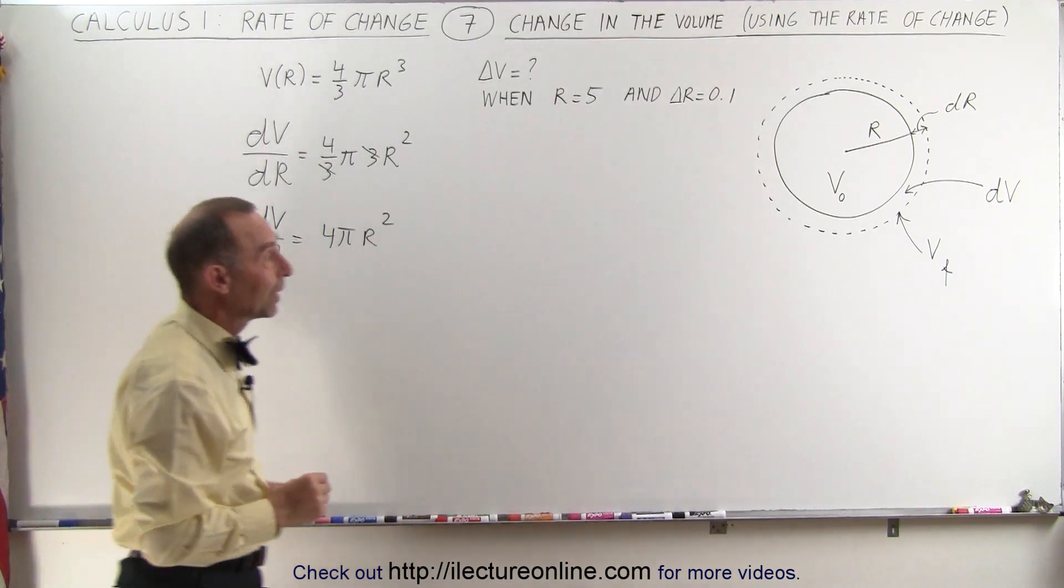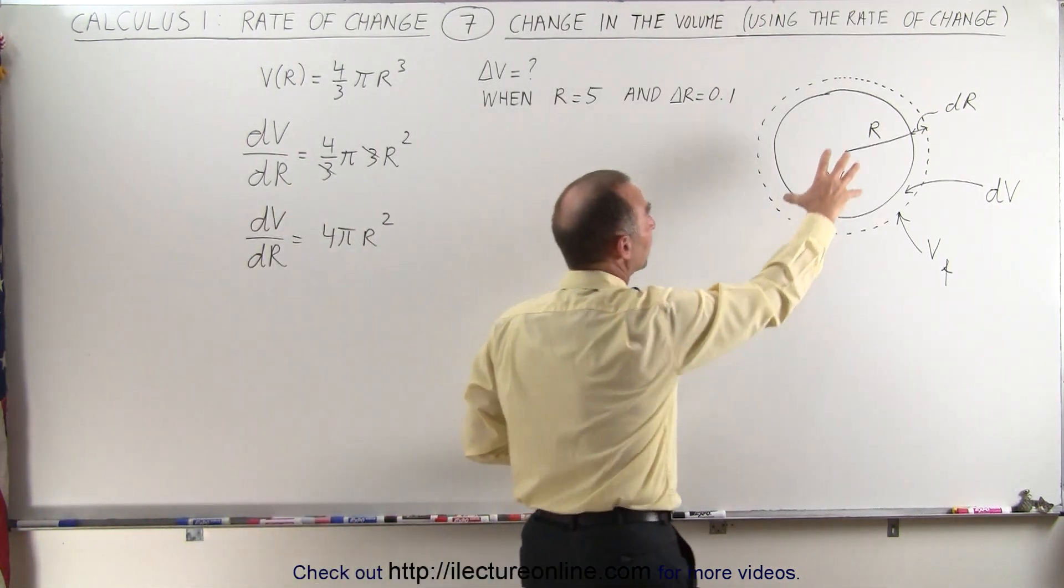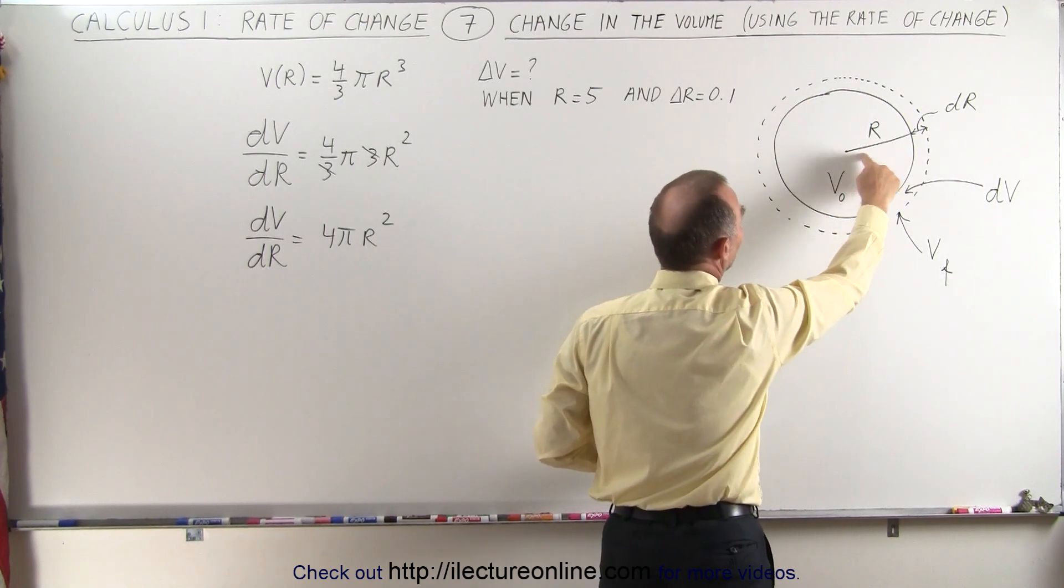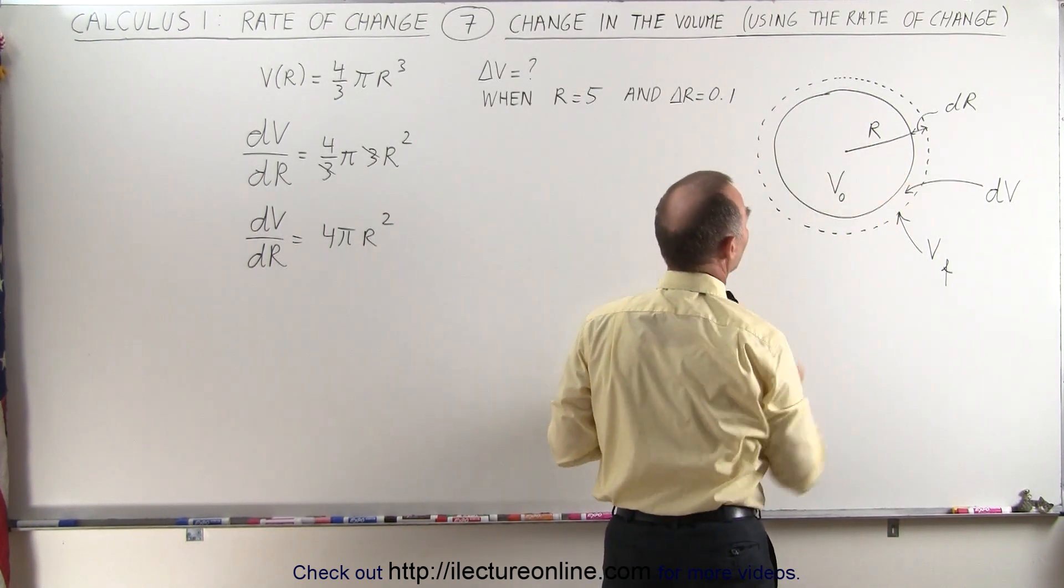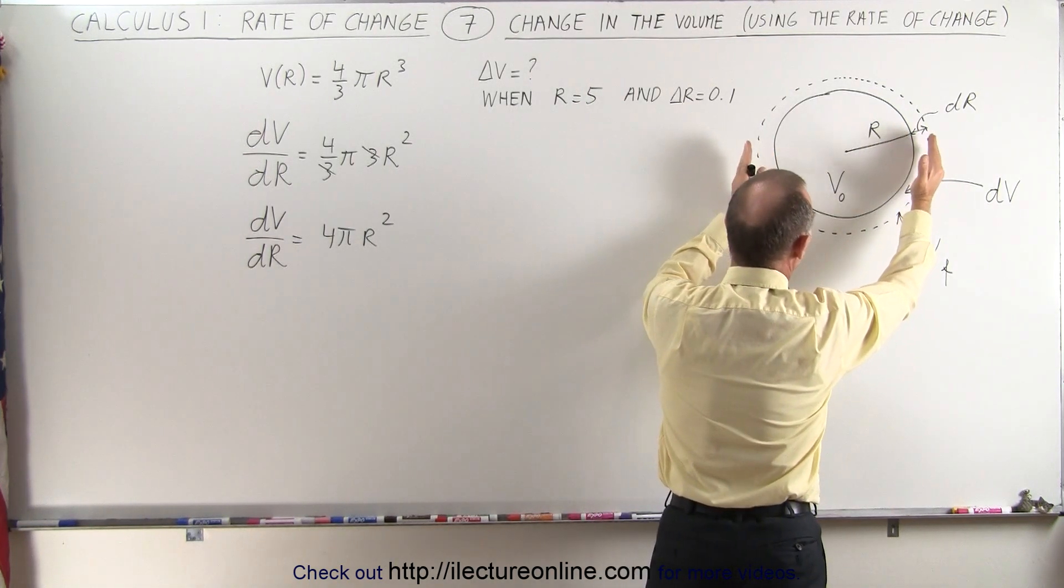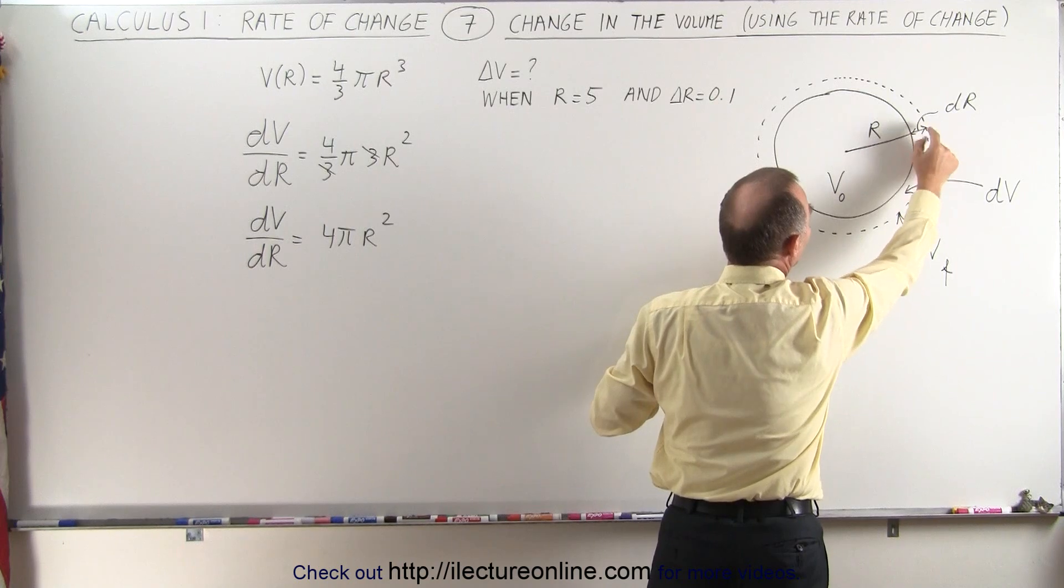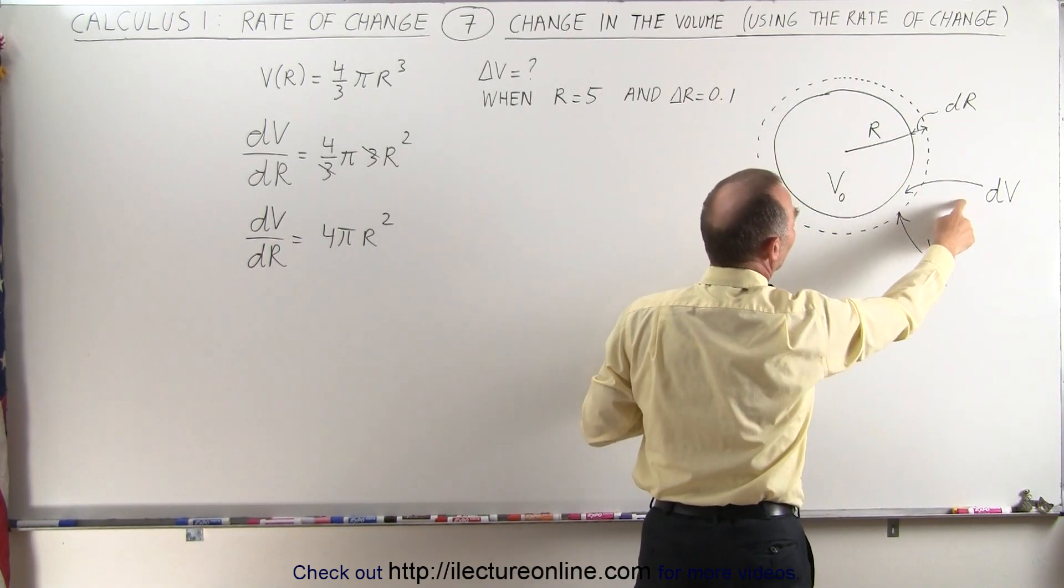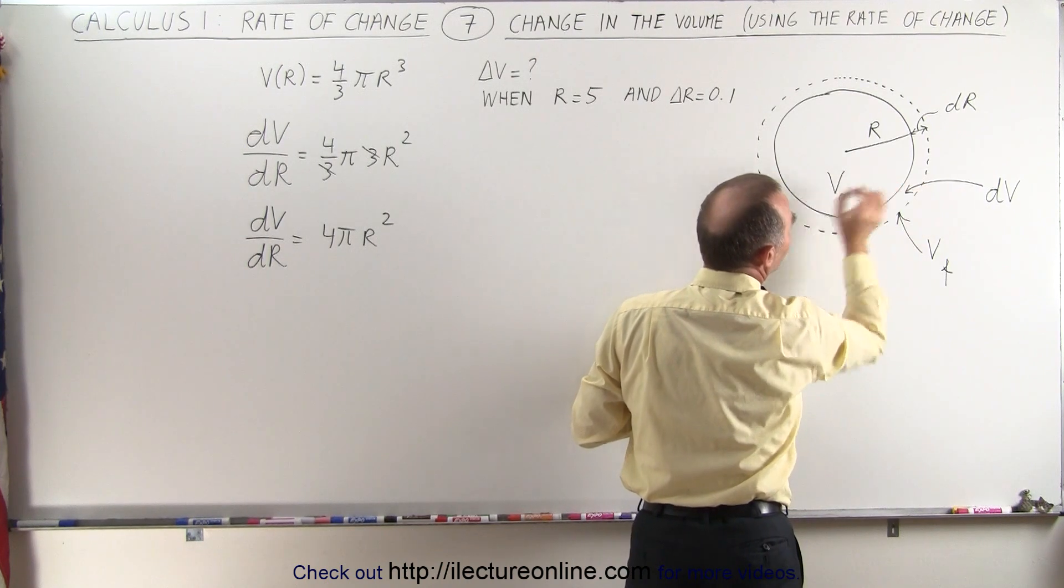What we're trying to find is this: Let's say we have the ball pumped up, or the balloon pumped up to a certain volume, we'll call that the initial volume, and it has an initial radius r. Now we're going to change the volume of the balloon just a little bit, and of course the radius is going to change by a small dr.